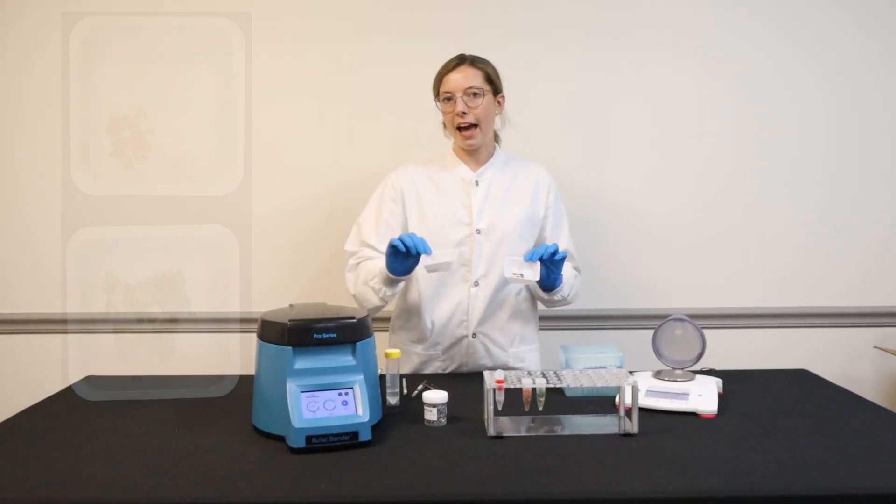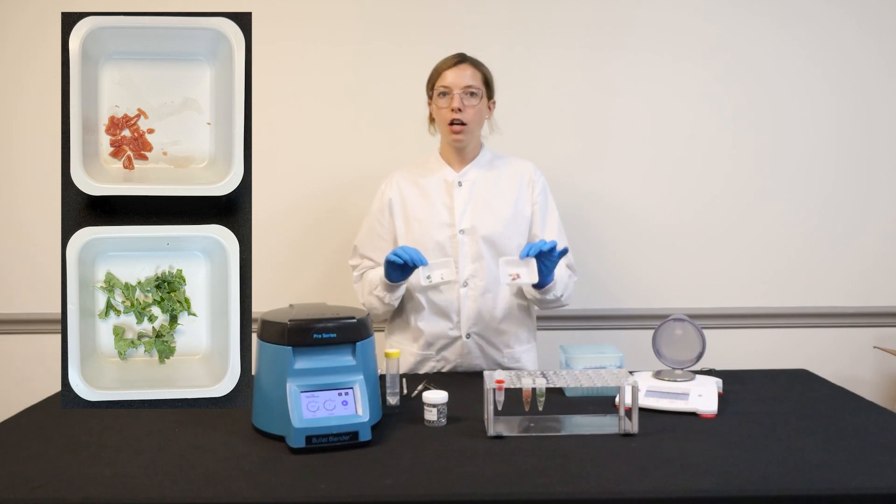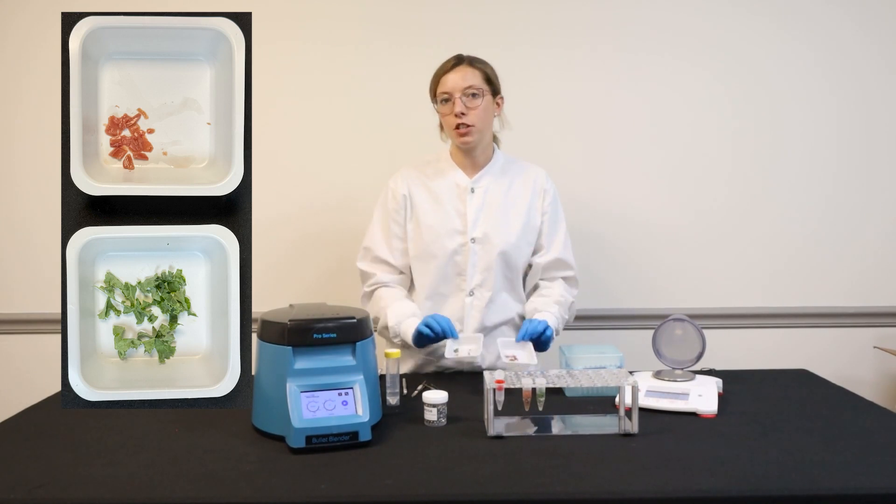Today I'm working on two different tissue types: I have kale and chicken heart. Both of these have been pre-cut into smaller pieces, which is a really important step to get that uniform homogenate.